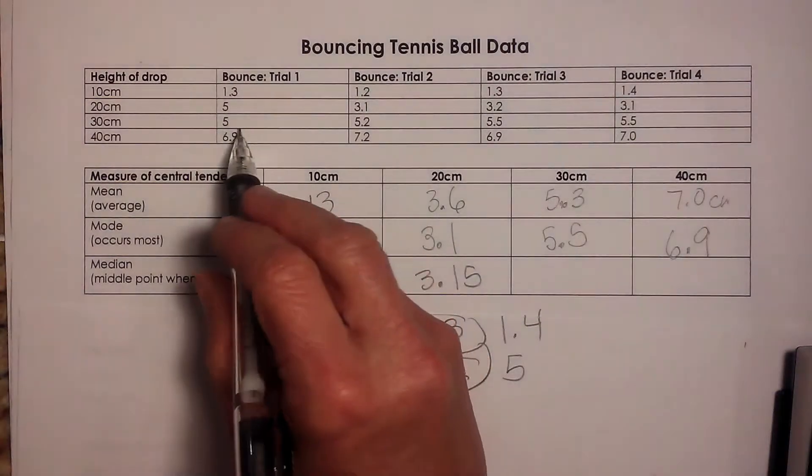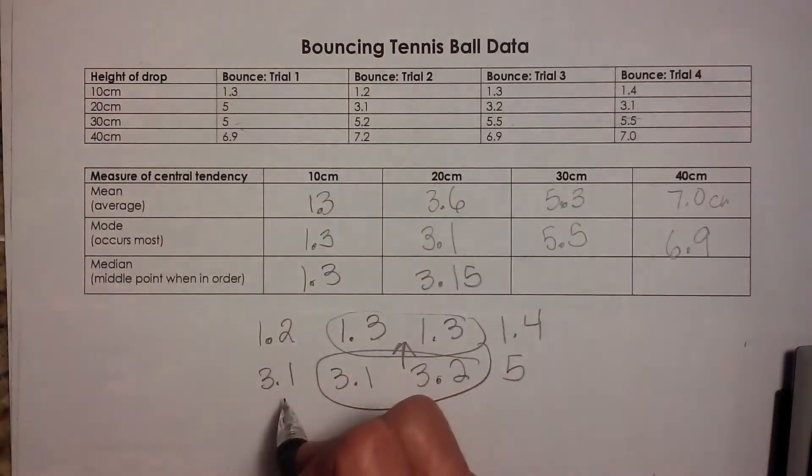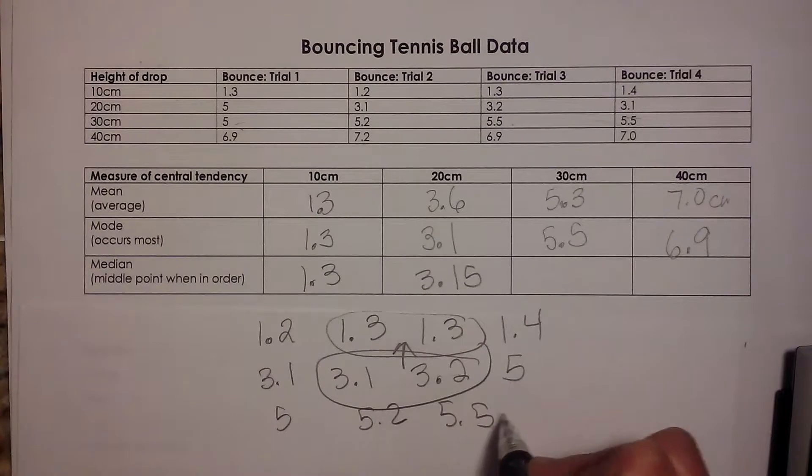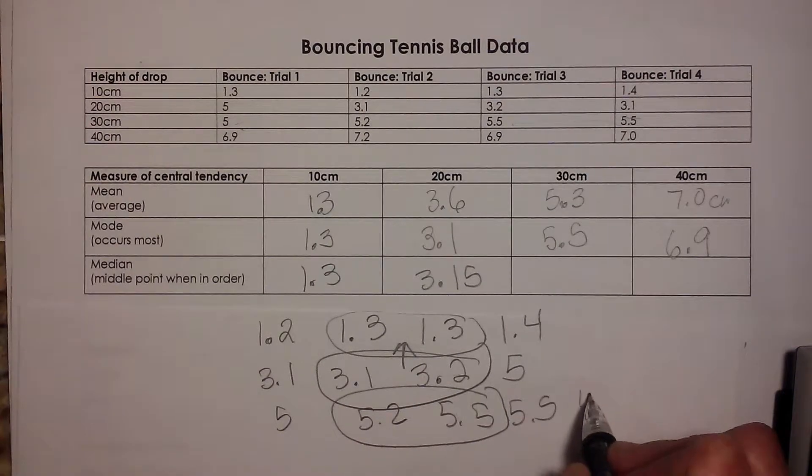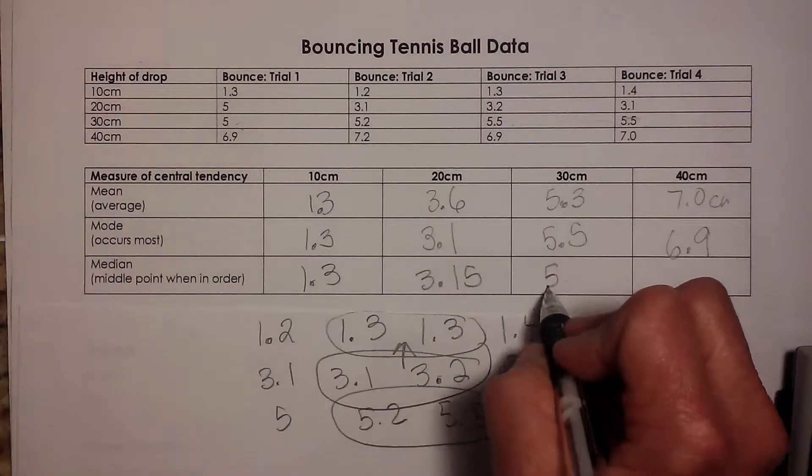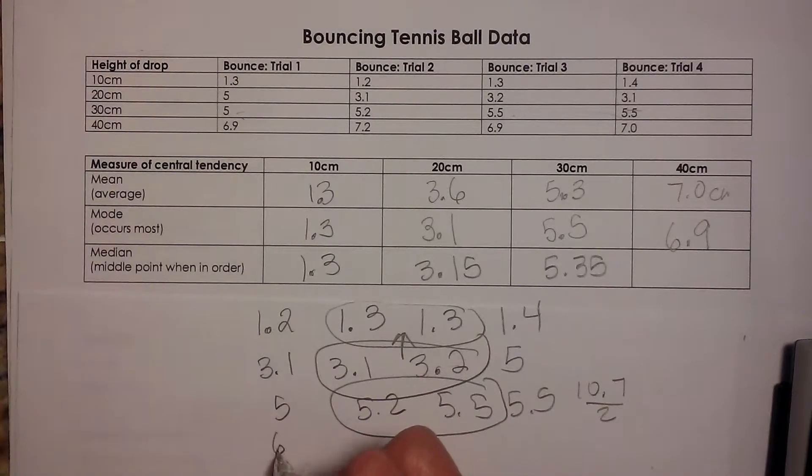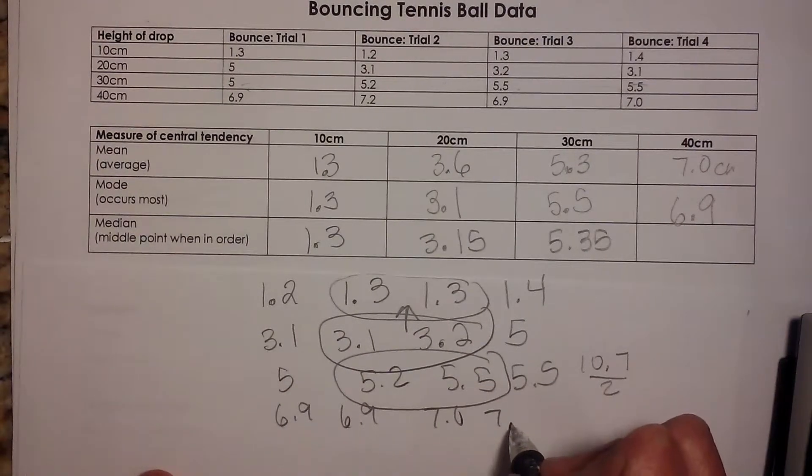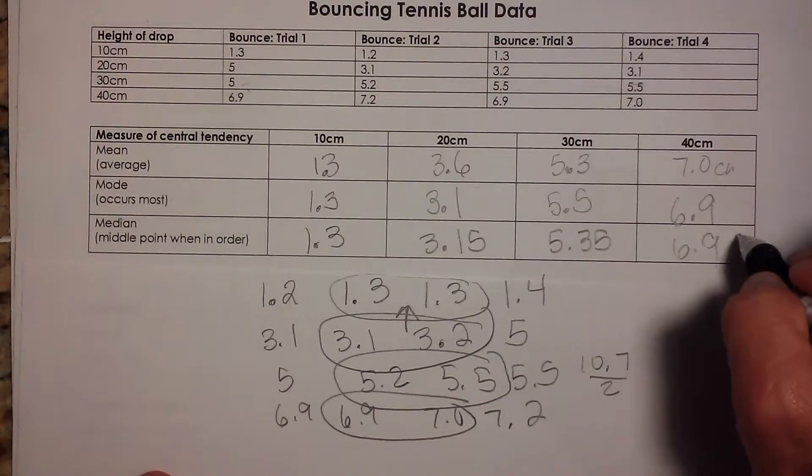And you just add and divide by 2. And then for the next one, my smallest is 5, then 5.2, and then these, so they're actually listed in order, 5, 5.2, 5.5, and another 5.5. So I'm going to average these two together. So that's, what, 10.7, so divided by 2 is 5.35. And my last one, 6.9, 6.9, 7.0, and then 7.2. So average these two, and that's 6.95. So there we go. We've got a table of different measures of central tendency.